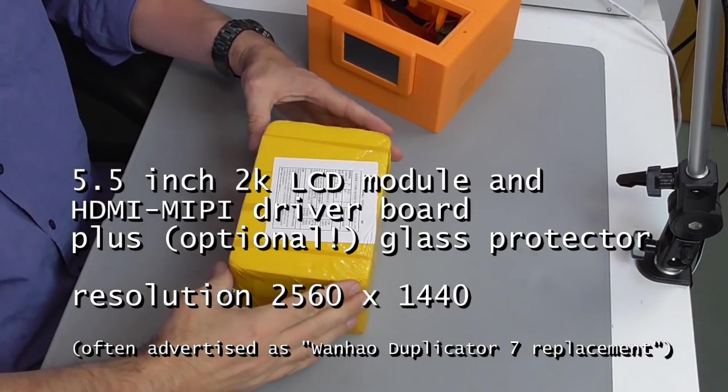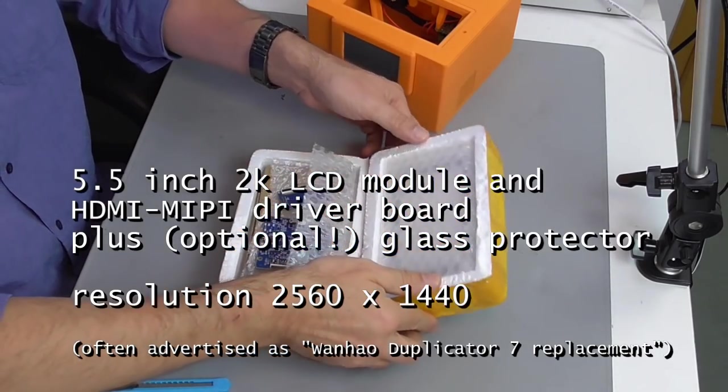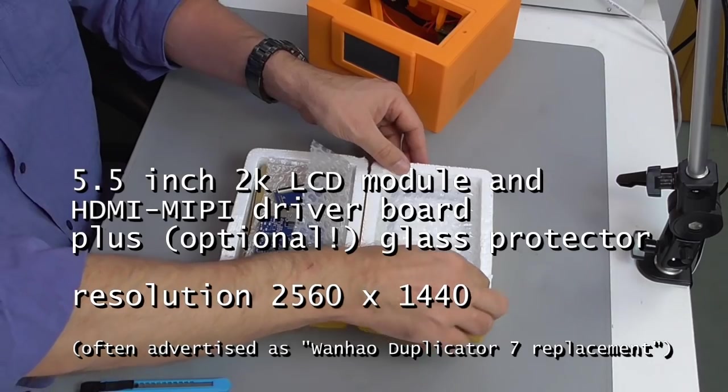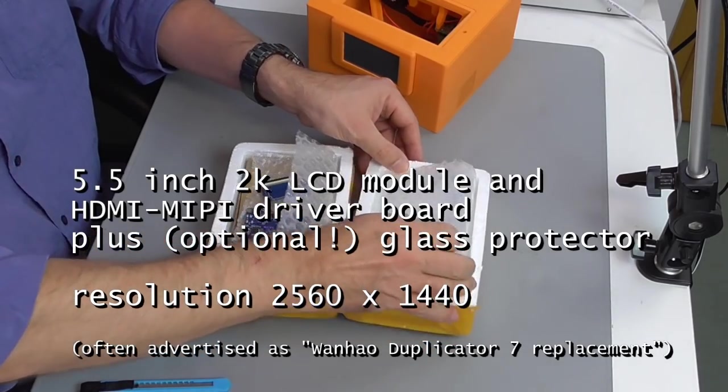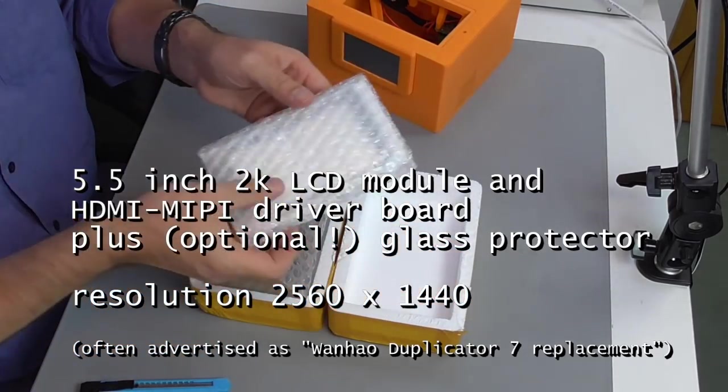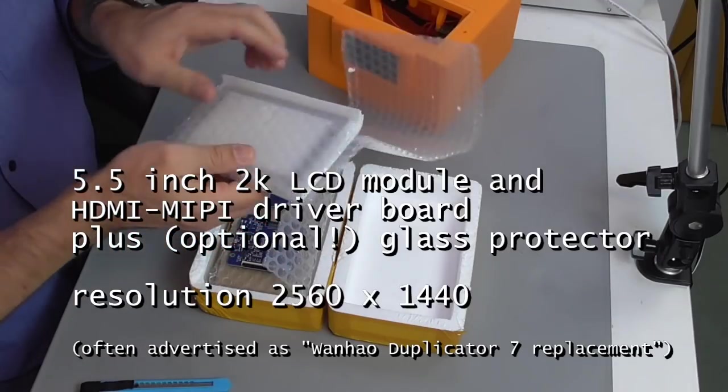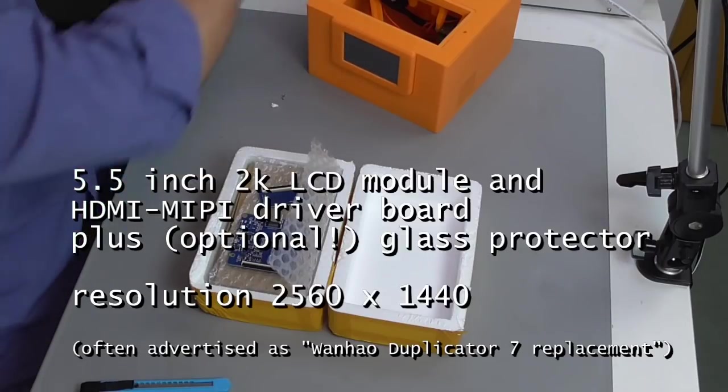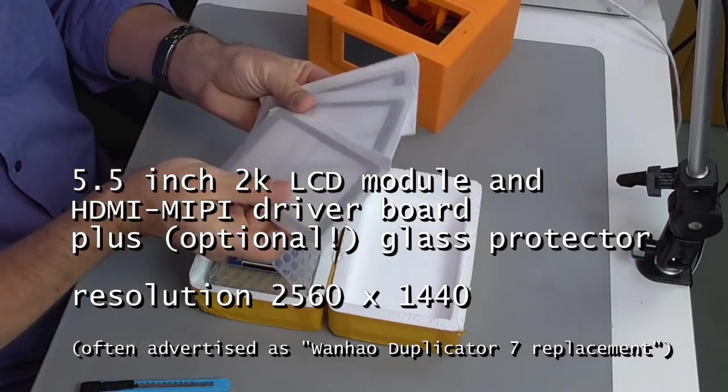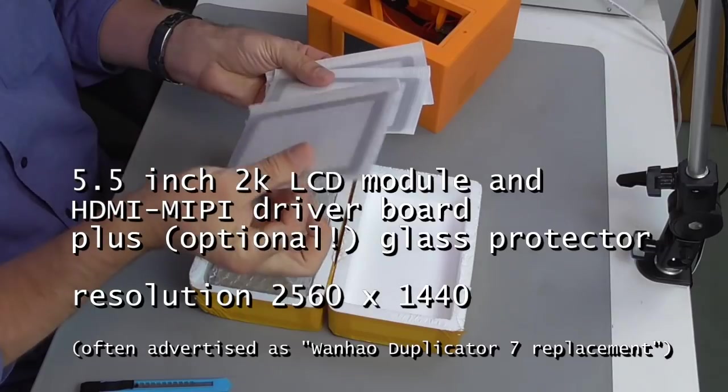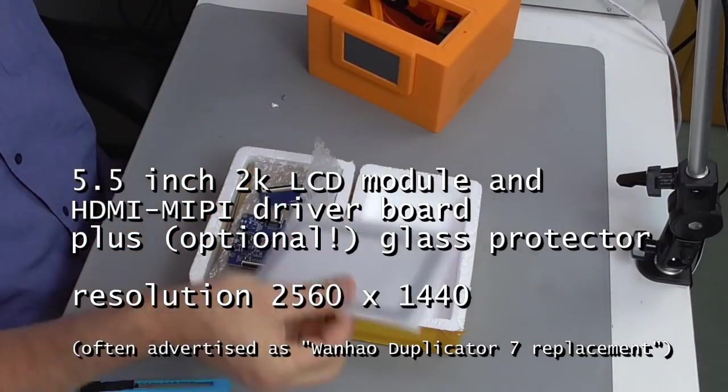As you can see, I received a nice little box directly out of China. It contains a 5.5-inch 2K LCD module together with an HDMI to MIPI drive board. I also ordered an optional additional glass protector, which is from my point of view absolutely necessary to protect your HDMI display from scratches or from cracks and also from the resin.